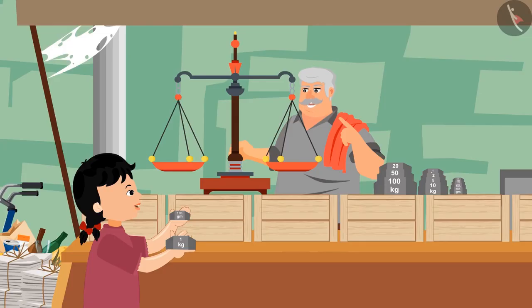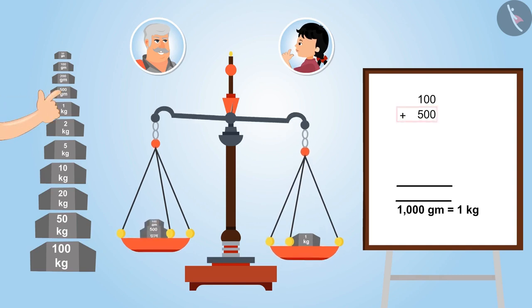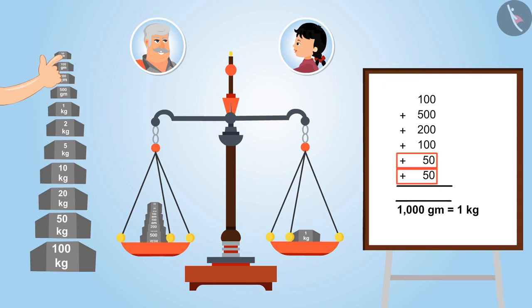Right, now place some more weight on the side carrying 100 grams, so that it becomes equal to 1,000 grams. Okay uncle, to this 100 grams, I am adding 500 grams, then 200 grams, then 100 grams, and the last two stones of 50 grams each. Yes, now the total is 1,000 grams, look uncle, the scale is now balanced.